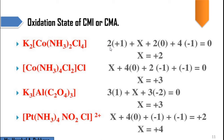For potassium tetrachlorodiamine cobalt: 2 × (+1) for K plus X for Co plus 2 × 0 for NH3 (neutral) plus 4 × (−1) for 4 chloride ions equals 0. So 2 + X + 0 − 4 = 0, giving X − 2 = 0, and thus X = +2. The oxidation state of cobalt in this complex is +2.